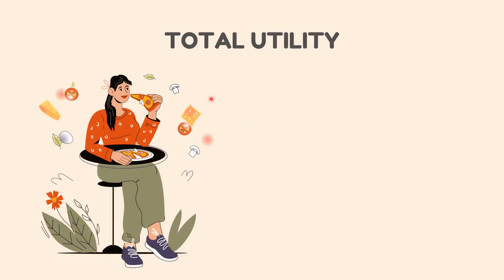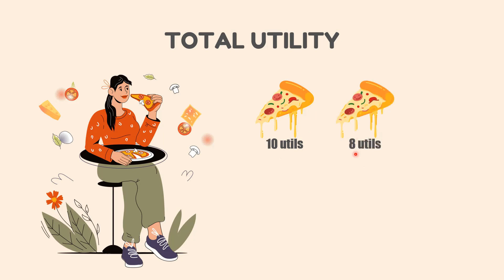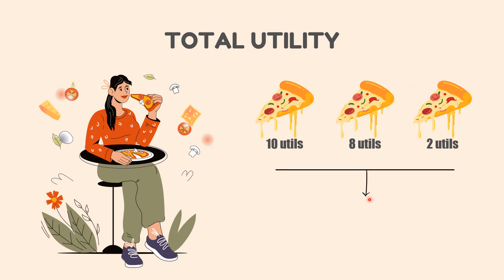Total Utility. If utility in economics is cardinal and measurable, the total utility is defined as the sum of the satisfaction that a person can receive from the consumption of all units of a specific product or service. Using the example above, if a person can only consume 3 slices of pizza and the first slice yields 10 utils, the second slice yields 8 utils, and the third slice yields 2 utils, the total utility of pizza would be 20 utils.